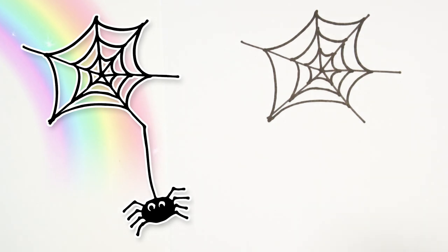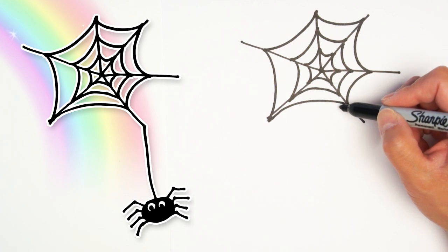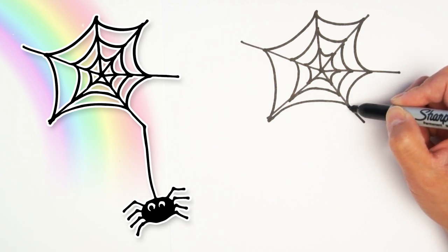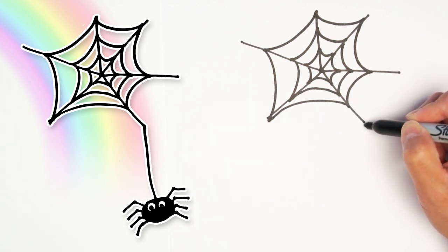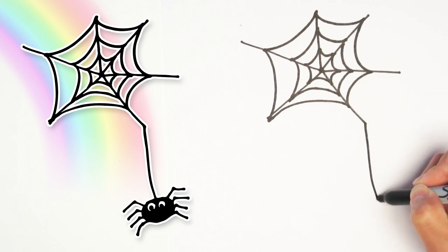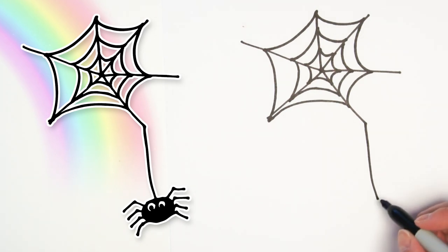We made a spider web. Next, let's draw one single line, a web from here to here. Let's draw a spider with a spider droppy.